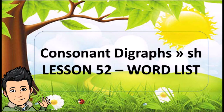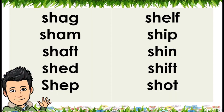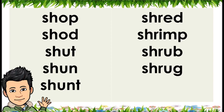Consonant Digraphs SH — Lesson 52. Word List: Shag, Shem, Shept, Shed, Shep, Shelf, Ship, Shin, Shift, Shut, Shop, Shod, Shun, Shunt, Shred, Shrimp, Shrub, Shrug.